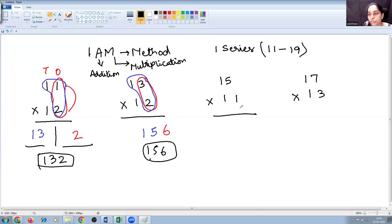Now, 15 into 11. Similar grounds. Multiply these two. That is 5 into 1 is 5 and then add these digits. 15 plus 1 is 16. So your final answer is 165.